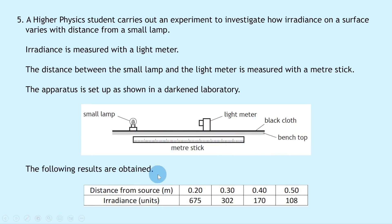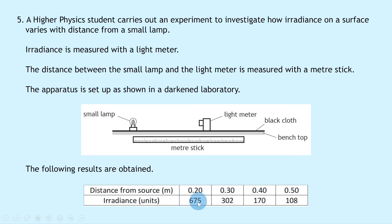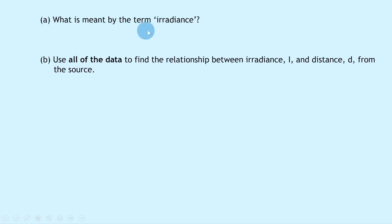The following results are obtained: distance from the source in meters ranges from 0.2 up to 0.5 in steps of 0.1, and irradiance is recorded in units. As the distance increases, the irradiance decreases. Part a asks what is meant by the term irradiance.